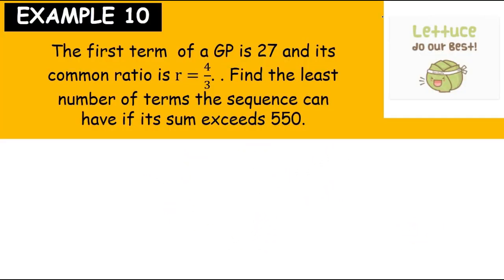Alright, so what happened here? The first term of a GP is 27 and its common ratio is R equals 4 over 3. Find the least number of terms the sequence can have if its sum exceeds 550.